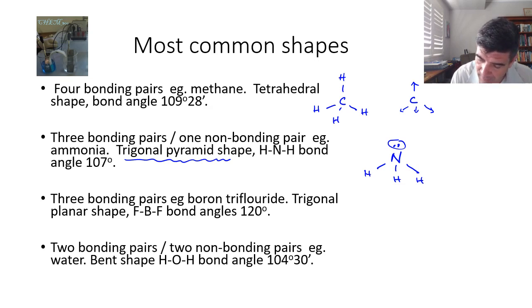If we don't have a non-bonding pair like we do in nitrogen, say in boron trifluoride, then we have exactly the same arrangement, but this time the boron actually comes into the same plane as the fluorine. So rather than sitting above the plane, it actually sits in the plane. It's now called a trigonal planar.